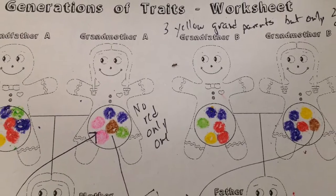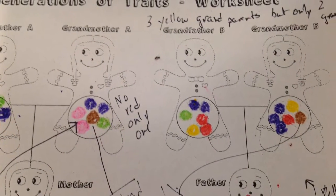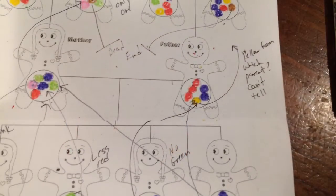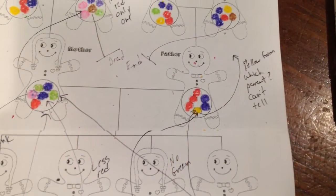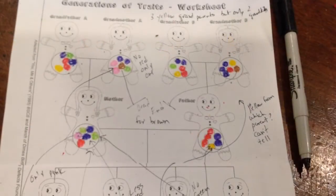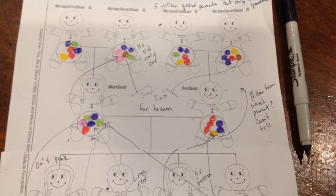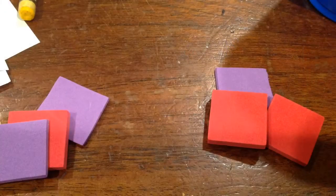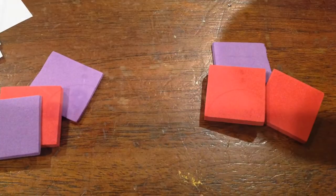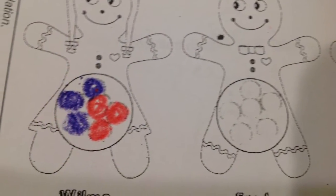The fun thing is that every group gets different results. Sometimes the siblings look very much alike, and other times they're all very different. Sometimes there are many dead-end traits or traits found in every single member of the family. A couple of times we have assigned different characteristics to these colors — we'll say red means freckles and purple means a long second toe and so on, just for fun.